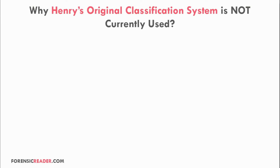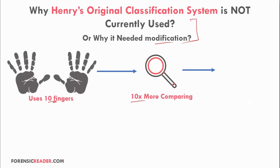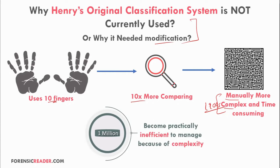The original Henry classification system is no longer used because it requires an examiner to perform 10 comparisons manually, which is complex and time-consuming. In the 1900s there were no computerized systems, making it harder to find a single fingerprint in a database. When the database reached 1 million records, it became practically inefficient to manage, which is why various federal agencies developed modified versions.